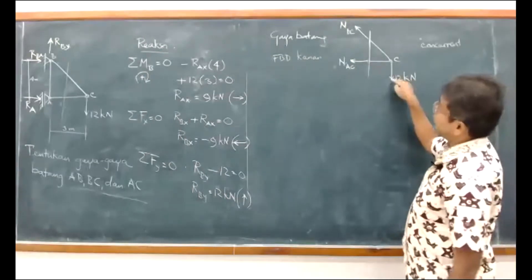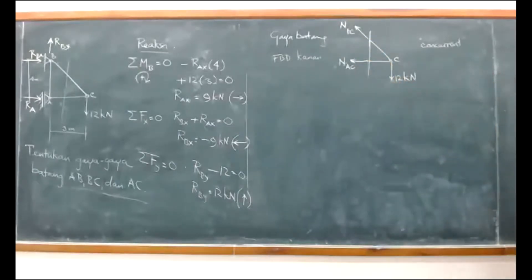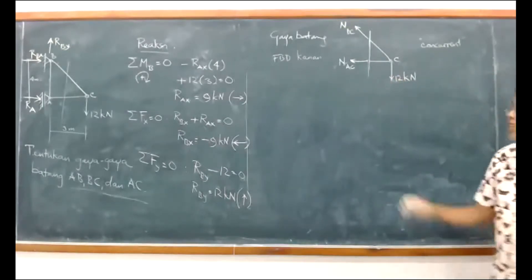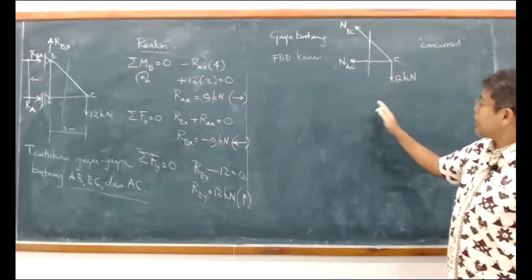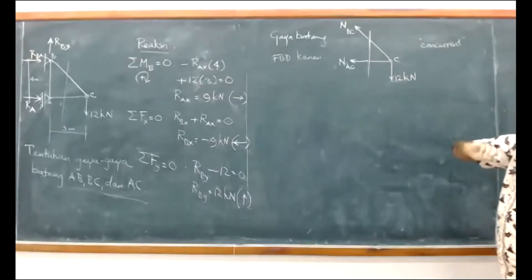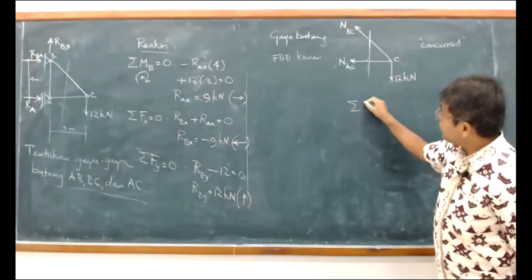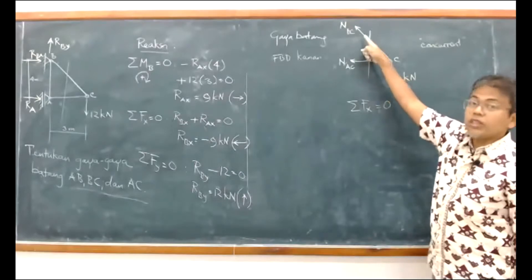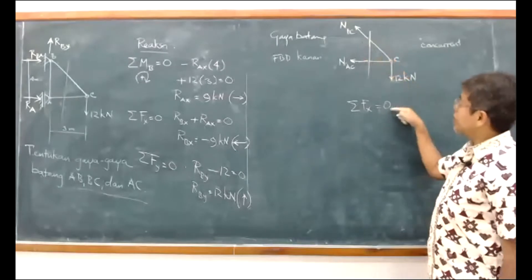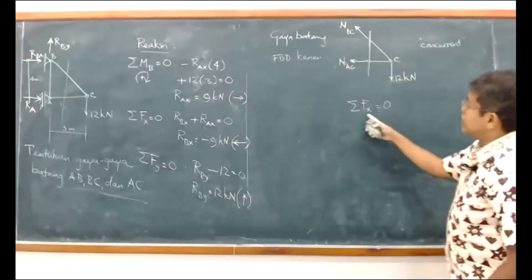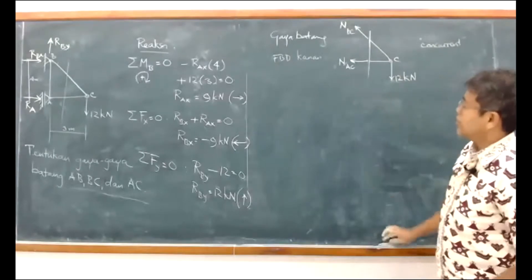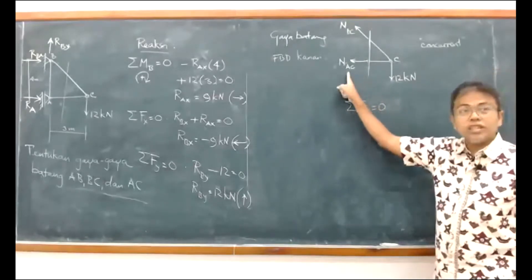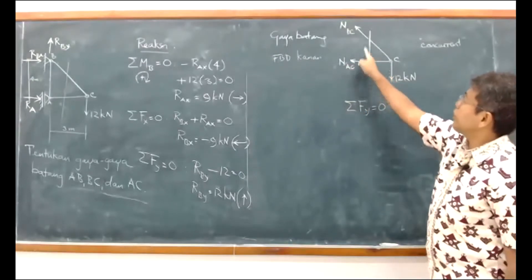Untungnya cuma ada dua unknown: NBC dan NAC bisa kita peroleh. Yang mana dulu? Kalau gunakan satu persamaan, salah satu bisa langsung diperoleh. Kalau sigma FX sama dengan 0, nanti ada NAC-nya — ini juga punya komponen dalam arah X, jadi dua-duanya akan tertulis. Saran saya jangan FX kalau begitu. Sigma FY. Kalau sigma FY sama dengan 0, NAC tidak akan ikut karena NAC-nya horizontal.